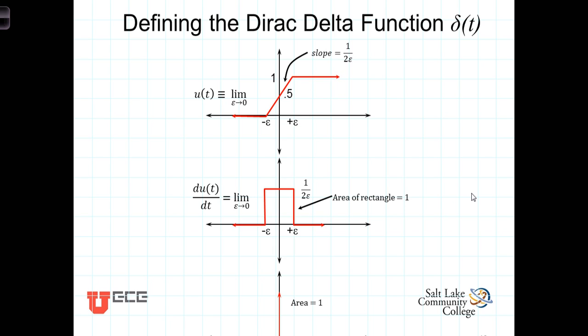We're going to define the delta function and call it delta of t in terms of the derivative of the step function. You'll recall how we defined the discontinuity of the step function at t equals zero using limits, and here we have it again.